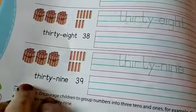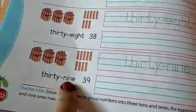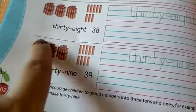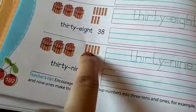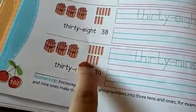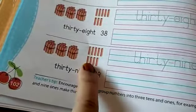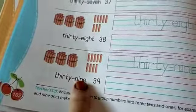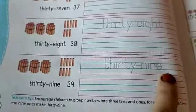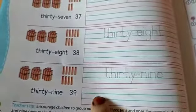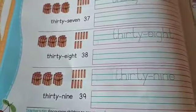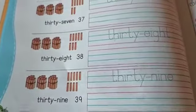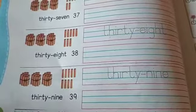Next one is 39 — three bundles of 10s and nine extra: 1, 2, 3, 4, 5, 6, 7, 8, 9. So 39. First trace the letters — thirty-nine. T-H-I-R-T-Y-N-I-N-E, thirty-nine.